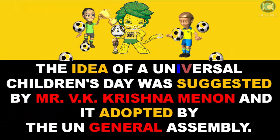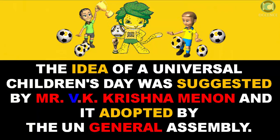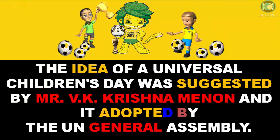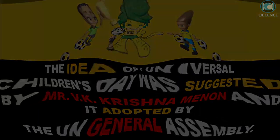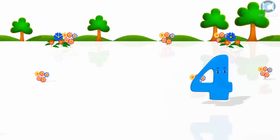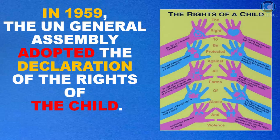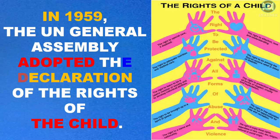The idea of a Universal Children's Day was suggested by Mr. V.K. Krishnamaynon and it was adopted by the UN General Assembly. In 1959, the UN General Assembly adopted the Declaration of the Rights of the Child.